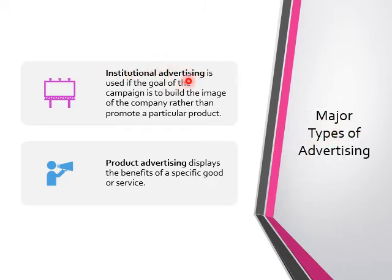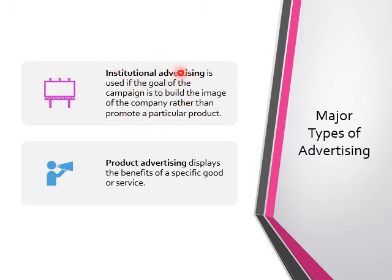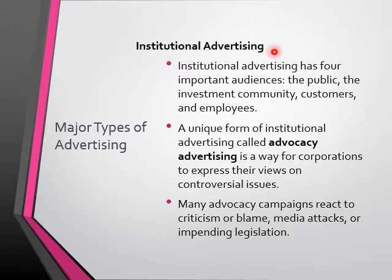There are two major types of advertising. The first is institutional advertising and the second is product advertising. Institutional advertising is used when the goal of the campaign is to build the image of the company rather than promote a particular product - it typically advertises about the company, not the product. Product advertising, from the word 'product,' displays the benefits of specific goods or services.